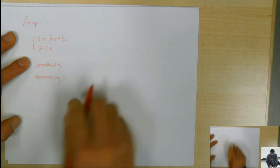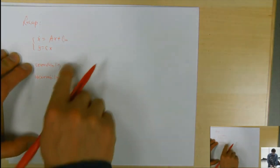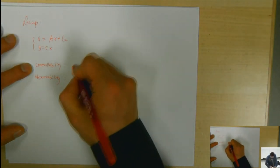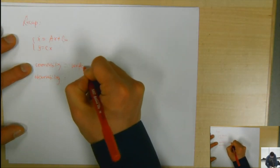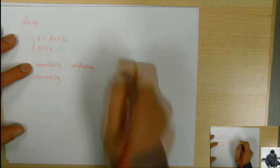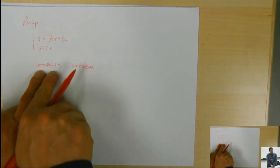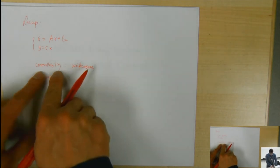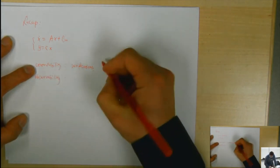We talked about how to judge whether a system is controllable or not — verifications — and also tools to separate the controllable part and uncontrollable part if the system is not controllable.